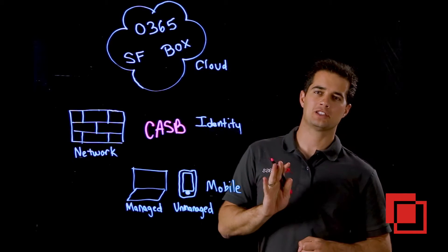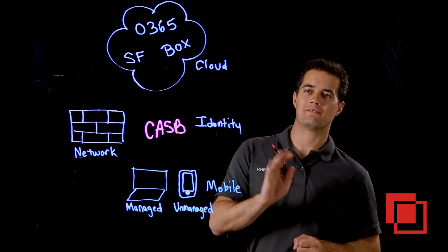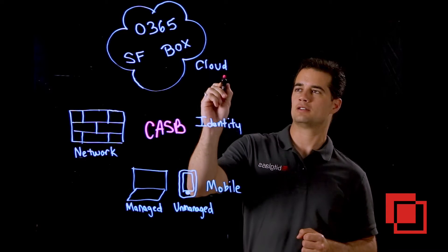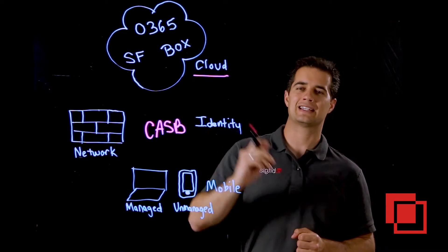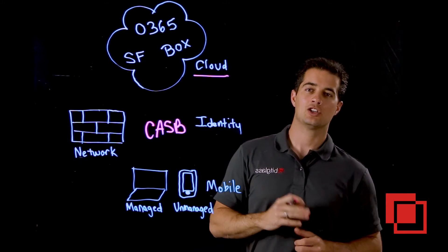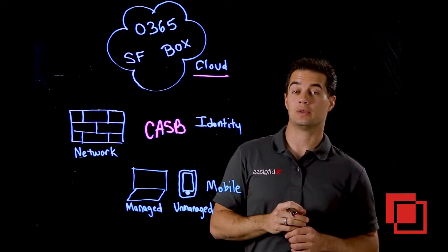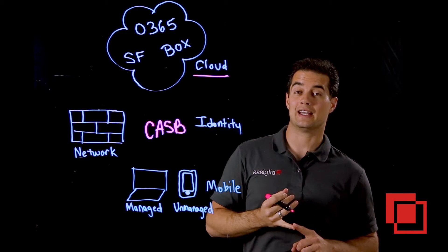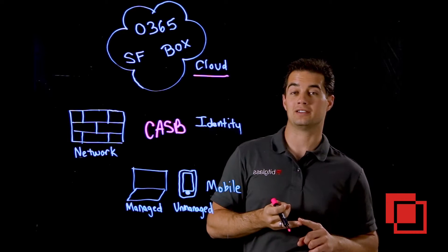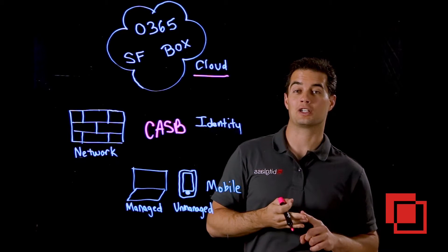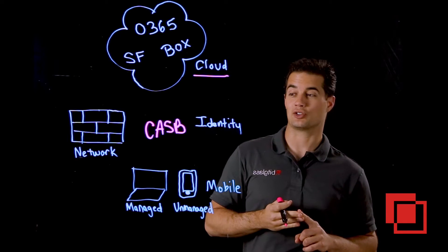A CASB exerts control in four main areas. The first one is the cloud. Here's where a CASB will do things like scan data at rest and allow you to apply policies such as encryption or controls over external sharing.